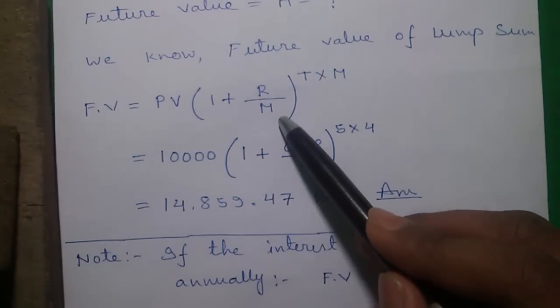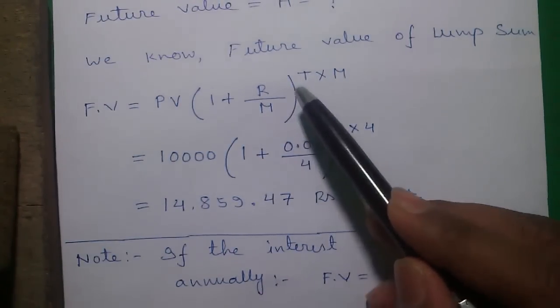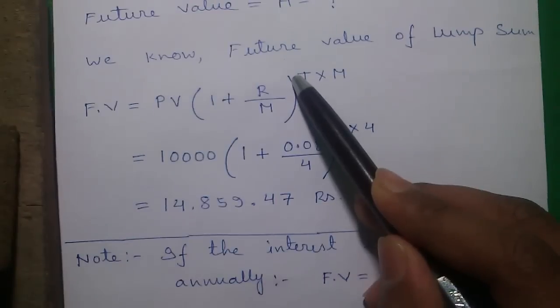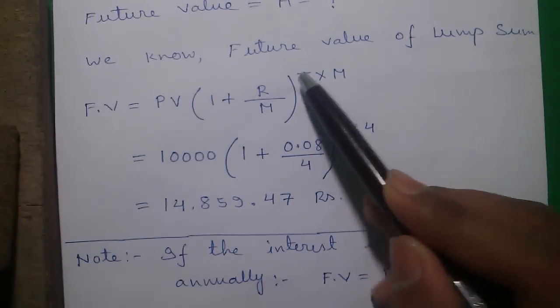The present value and future value formula is just same. In present value, here is the minus symbol, and in future value, this is the plus symbol. That is the only difference.